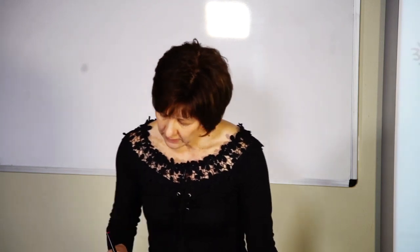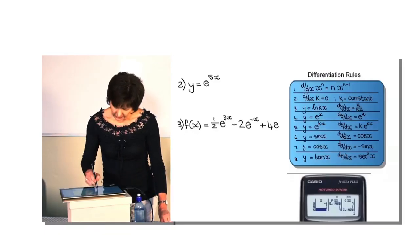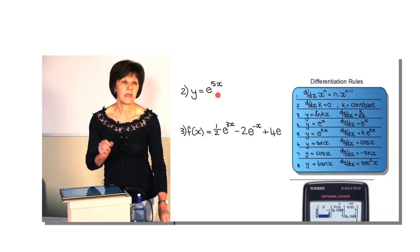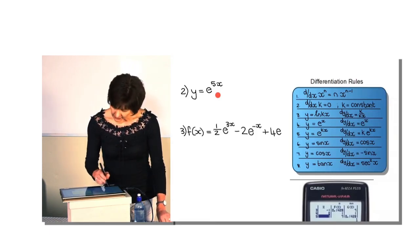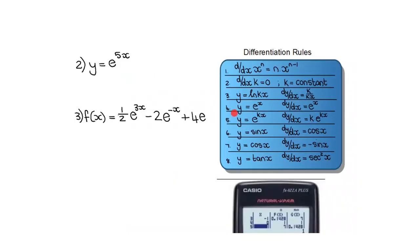In the next example, I have to differentiate e to the power 5x. I have a rule that says if I have e to the power kx, the derivative will be k times e to the power kx. So I just apply the rule — in this case the k will be 5, so it will be 5e to the power 5x.